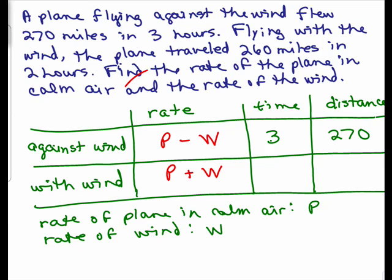Flying with the wind, it went 260 miles, that's our distance. Going with the wind, the time was two. So I'm filling in a chart for what's really going on, taking into account the wind, the actual rate in the air going against the wind, the time, the distance, and with the wind.